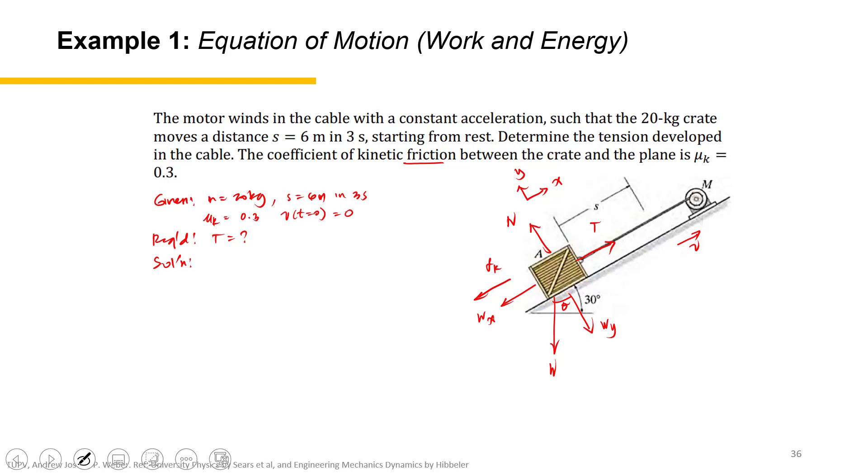So first let's do it with Y. Sum of all forces along the Y equals zero because there is no motion along that direction. So that would be N equals W_y, which equals M g cosine theta.